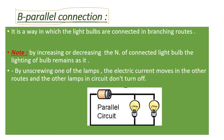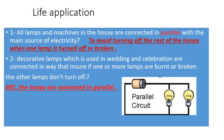Number two, called parallel connection, in which the light bulbs are connected in branching routes. In parallel connection, by increasing or decreasing the number of light bulbs, the lighting intensity remains the same. There are branching routes for the electric current, so by damaging or breaking one lamp, the electric current moves through the other routes and the other lamps in the circuit don't turn off. All lamps and machines in the house are connected in parallel with the source of electricity to avoid turning off when one lamp is broken.